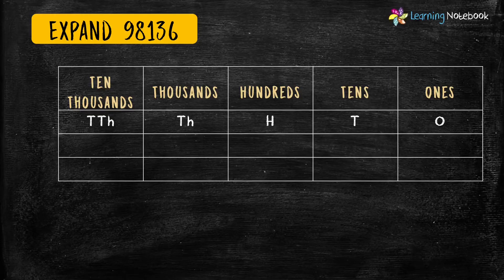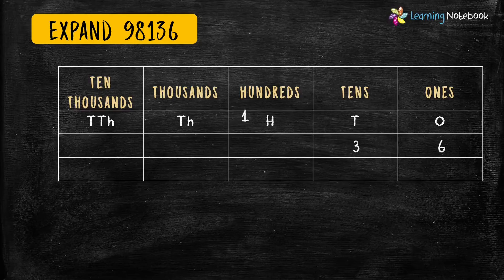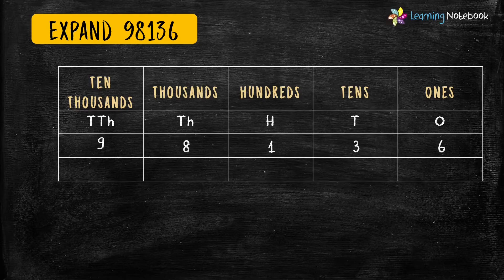Let's write digit 6 at the 1's place, digit 3 at the 10's place, digit 1 at the 100's place, digit 8 at the 1,000's place, and digit 9 at the 10,000's place. Now let's find the place values of all these digits.